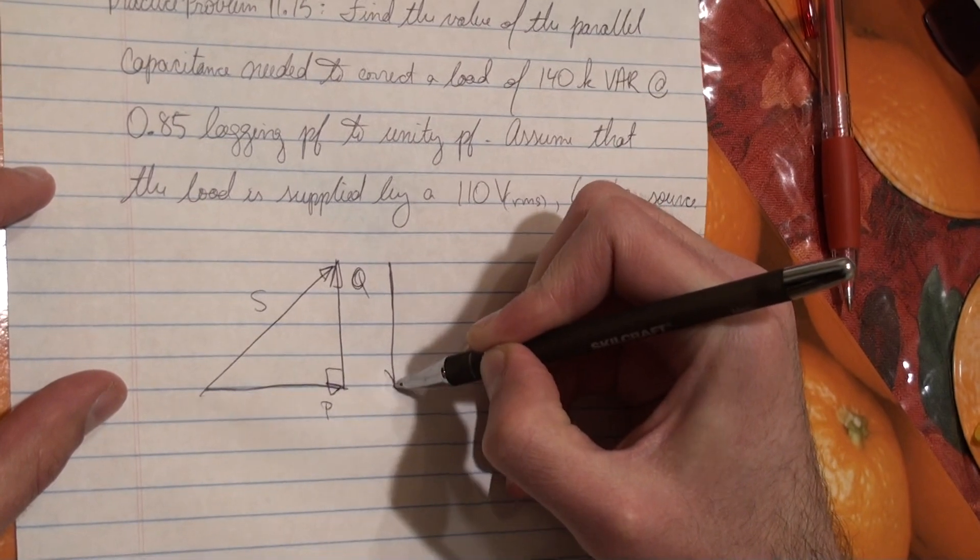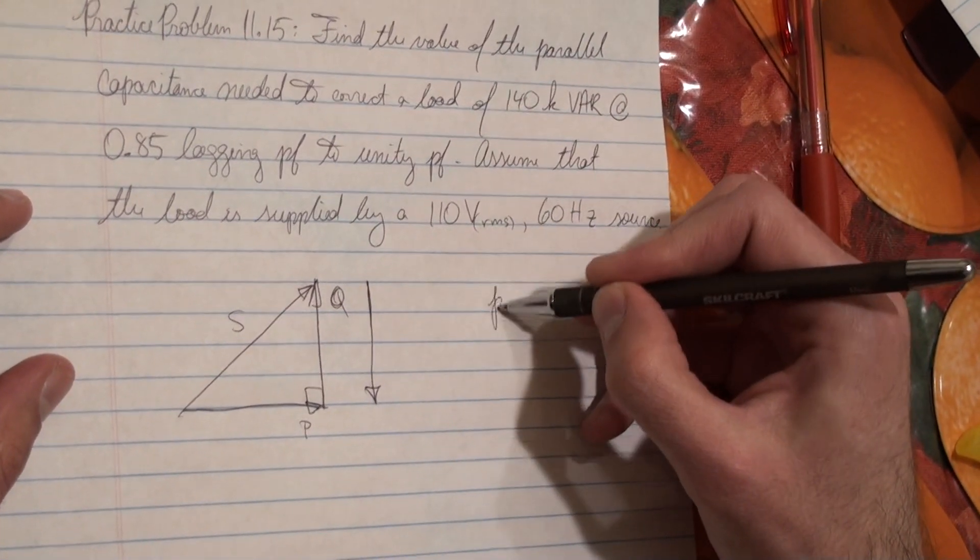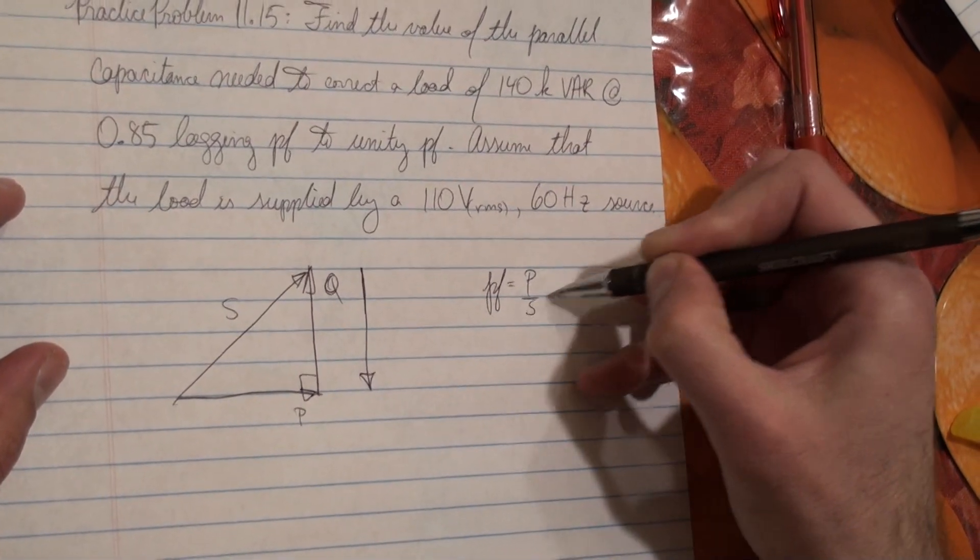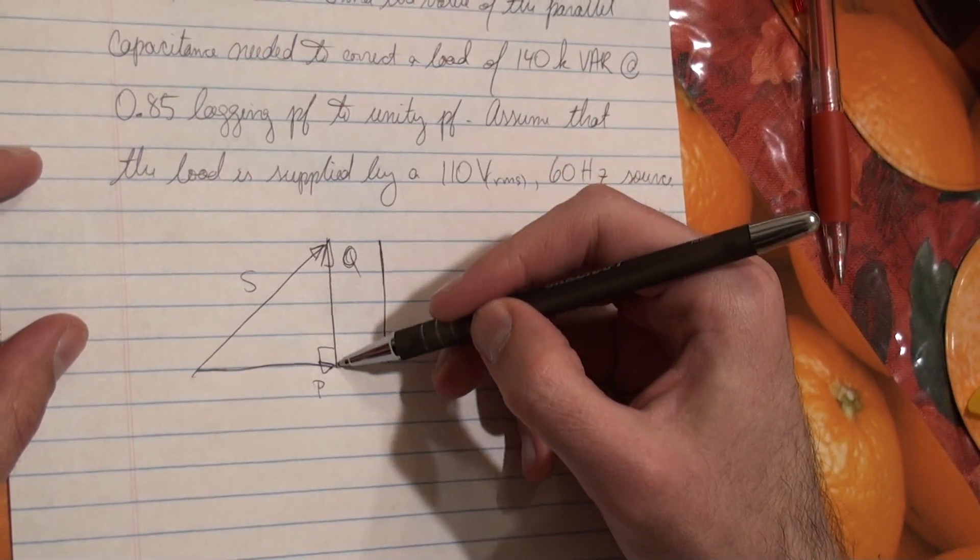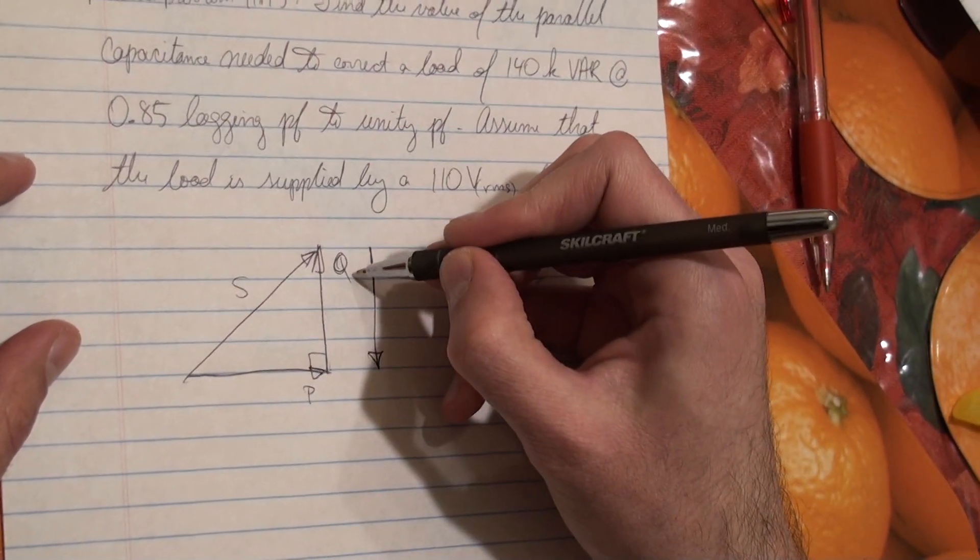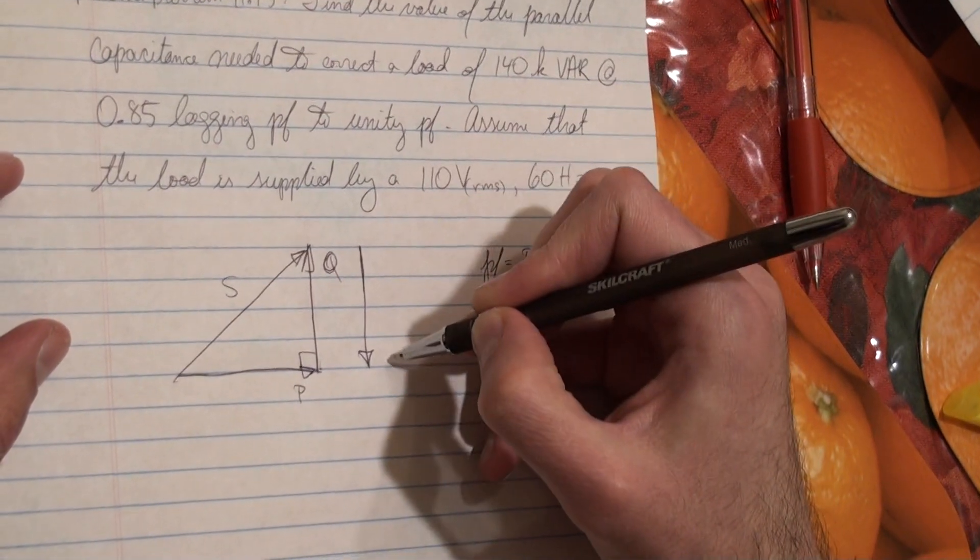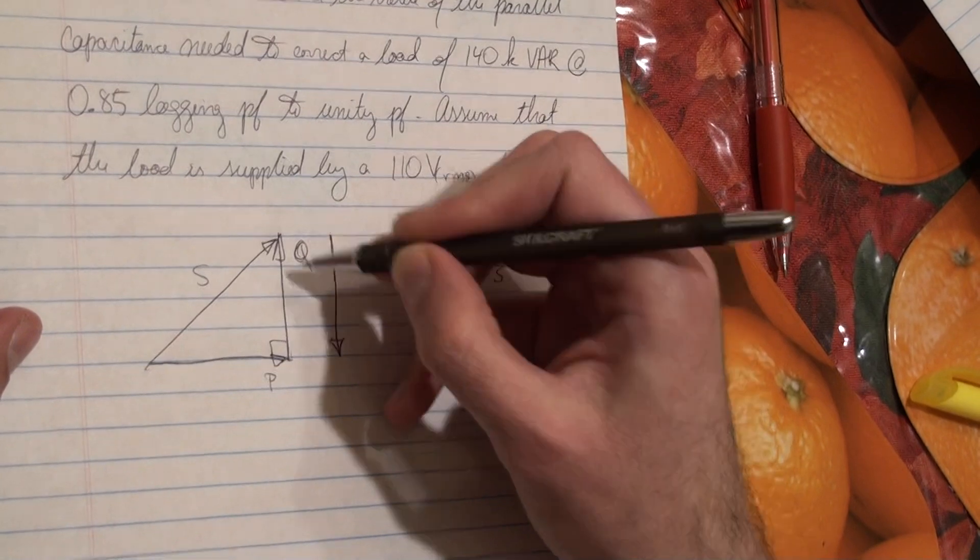we need to add a capacitance such that we cancel this completely so that our power factor, which is equal to P over S, is equal to 1. That only happens when P and S are equal, and that can only happen when this Q is completely subtracted out. So our value of capacitance is determined by how much Q we need to suppress.